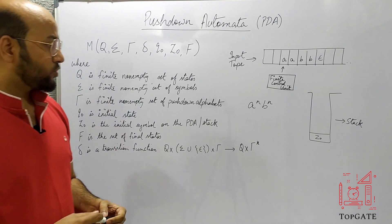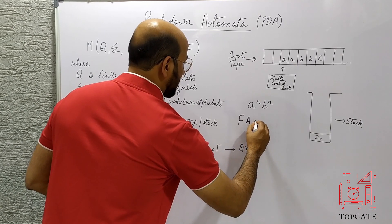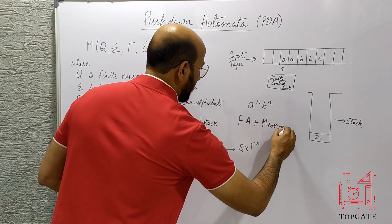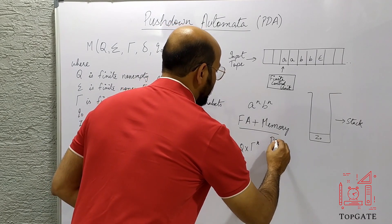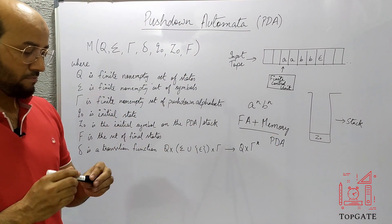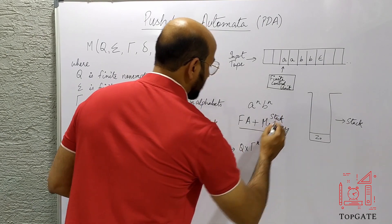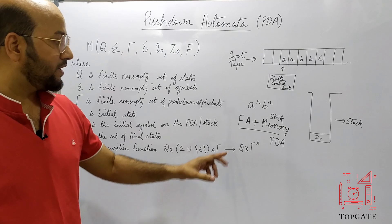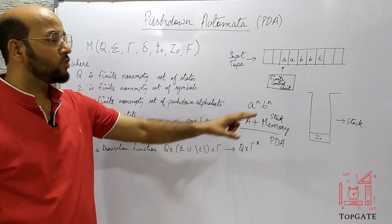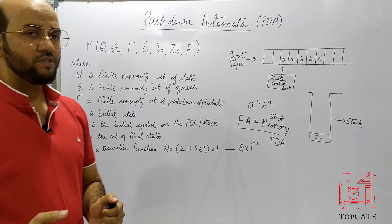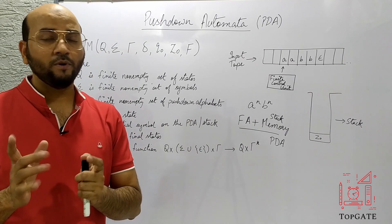So if we add some memory to the finite automata, we come up with a new idea called a push down automata, or PDA. Specifically, if we add a stack to the finite automata, we get a PDA. This PDA will be able to accept languages like A to the power N, B to the power N, plus all languages accepted by finite automata, plus some additional languages that finite automata was not able to accept.